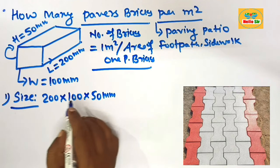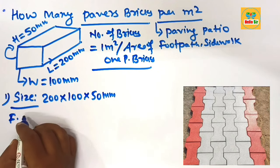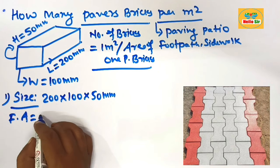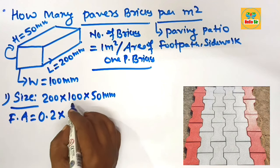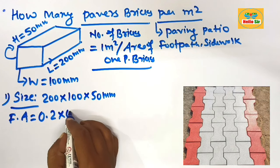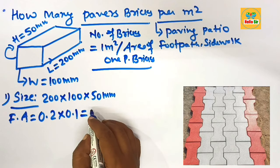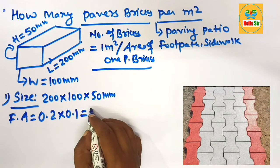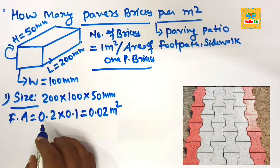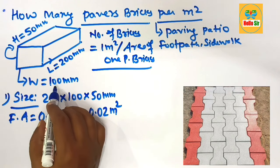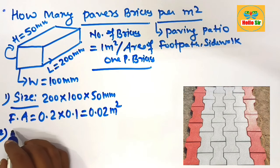To calculate the face area of this first size, multiply the length in meters (0.2 m) by the width in meters (0.1 m). The face area of one paving brick of this size is 0.02 square meters.